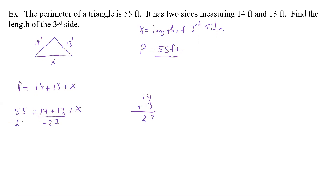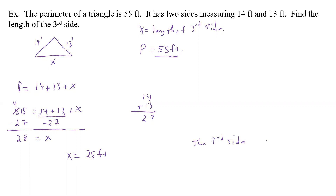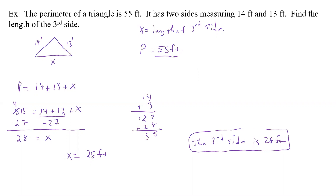We subtract 27 from both sides. That cancels on the left leaving x, and we compute 55 minus 27: borrow to get 15 minus 7 is 8, and 4 minus 2 is 2 — so x equals 28 feet. The third side is 28 feet. Check: 14 plus 13 is 27, and 27 plus 28 equals 55 — that's exactly the perimeter we were given. The correct answer is 28 feet.